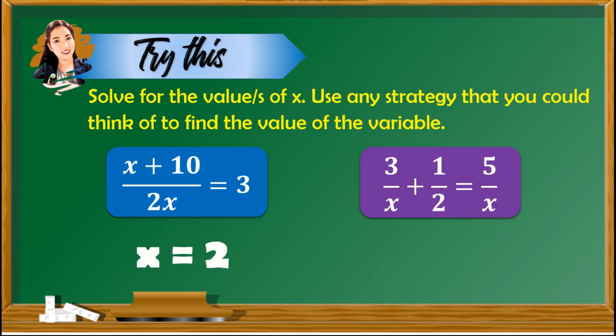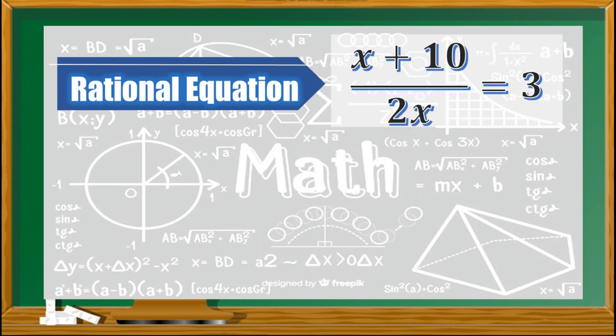For the second equation, 3 over x plus 1 half is equal to 5 over x. The answer here is x equals 4. If you were not able to answer these items, don't feel bad because this is the reason why I made this video. Now, let us have the important concepts.